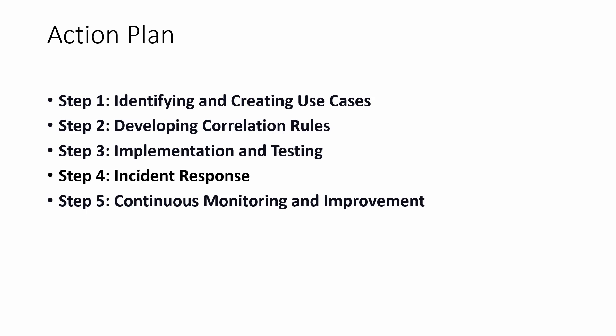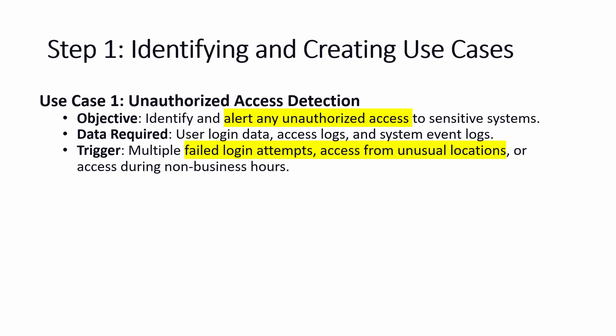Now let's understand with the case study how to create use cases. When looking at the case study, we have an action plan. First, we identify and create the use cases. Second, we develop the correlation rules. Third, we implement and test. Then we handle incident response. Finally, we perform continuous monitoring and improvement. So the first step is identify and create use cases, second is develop the correlation rules to avoid duplications, then implement and test, then discover and respond to incidents, and then improve the overall program through continuous monitoring.